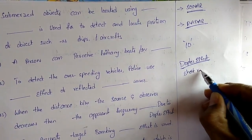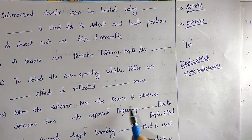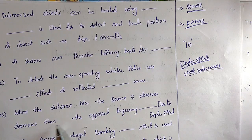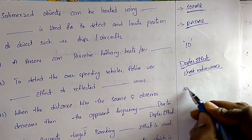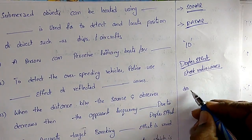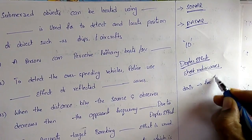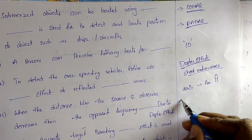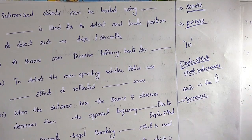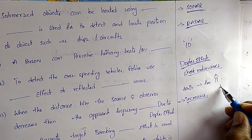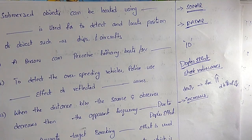Question 23: When the distance between the source and observer decreases, the apparent frequency increases due to the Doppler effect. Conversely, if the distance increases, the apparent frequency decreases.